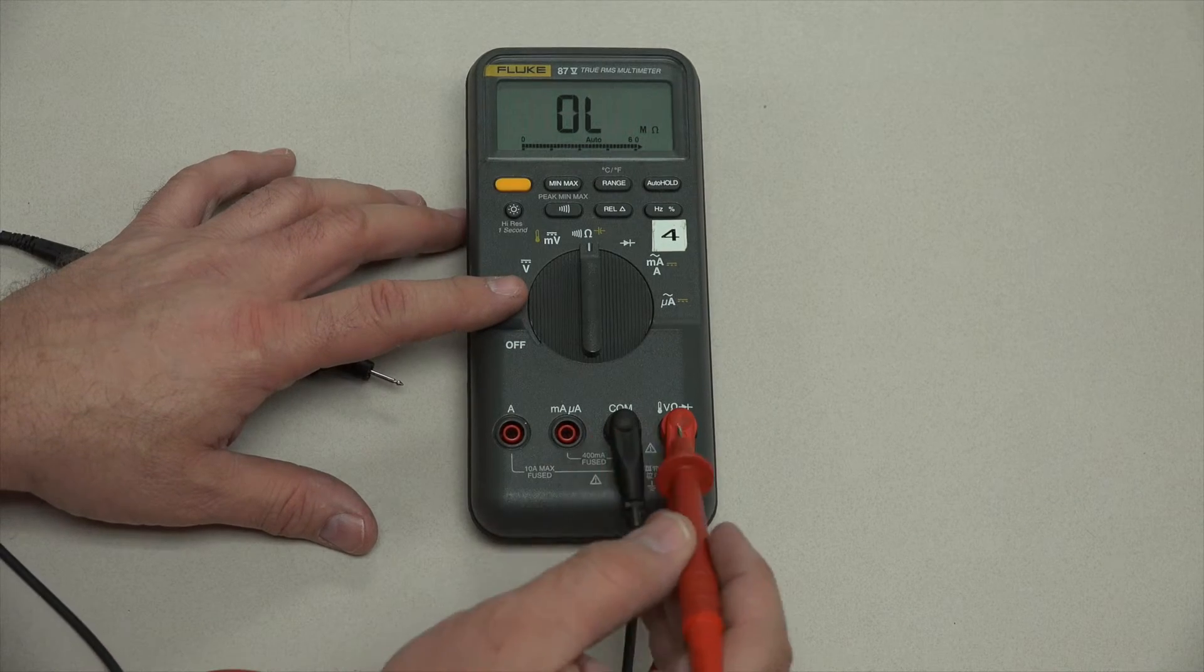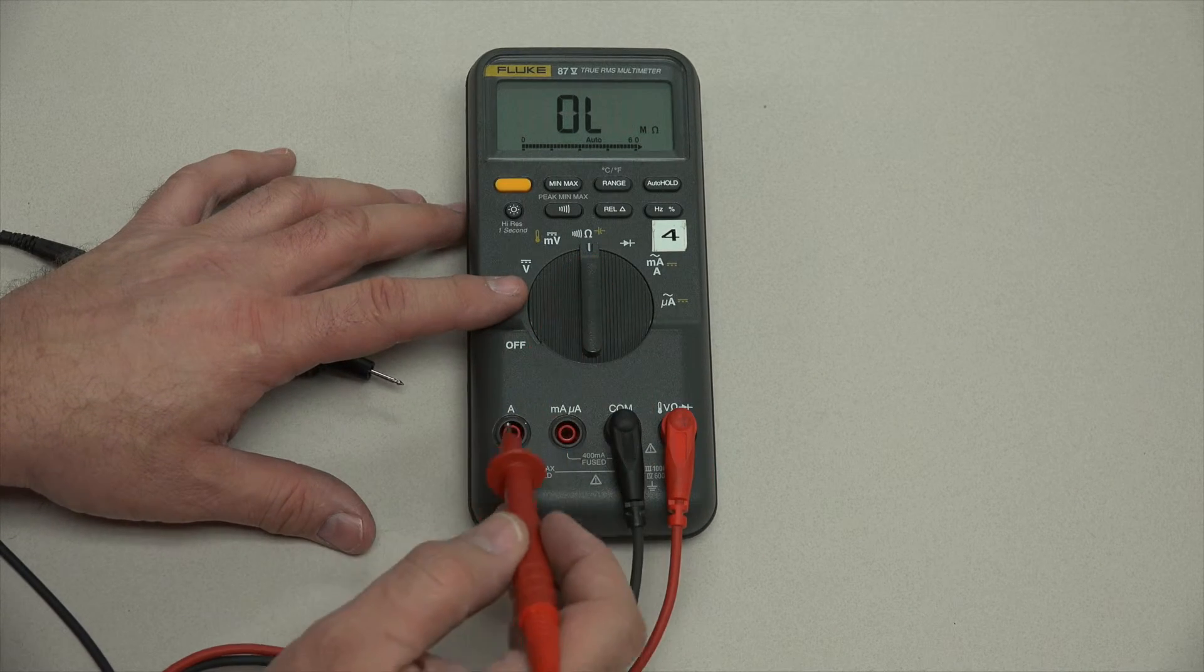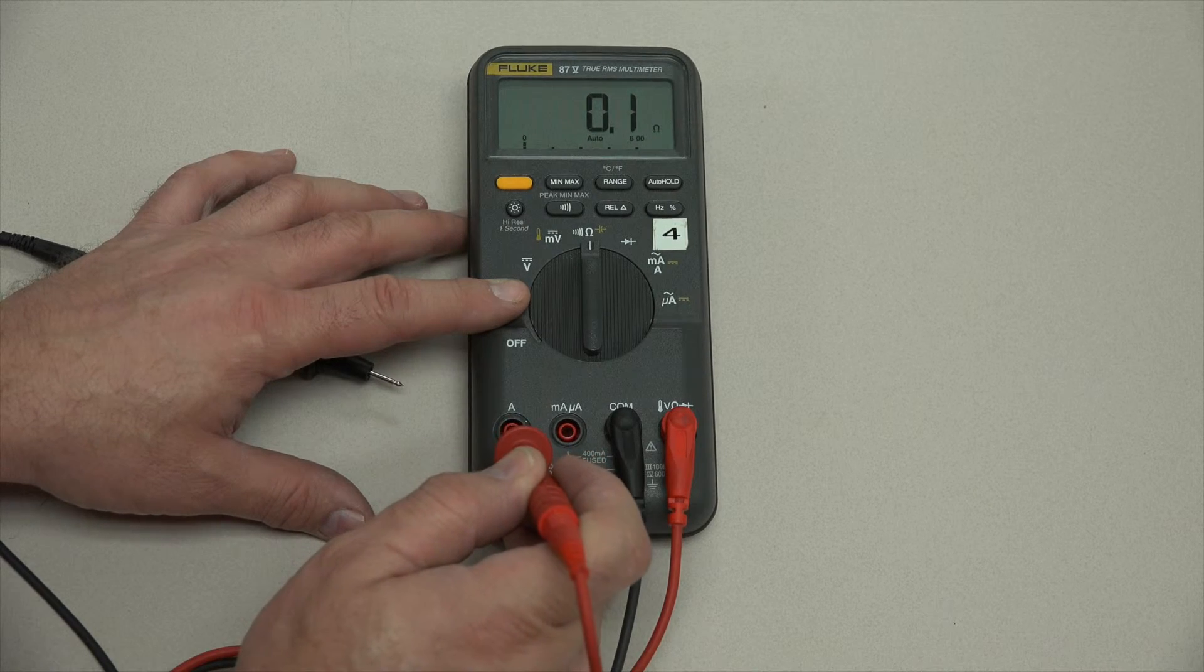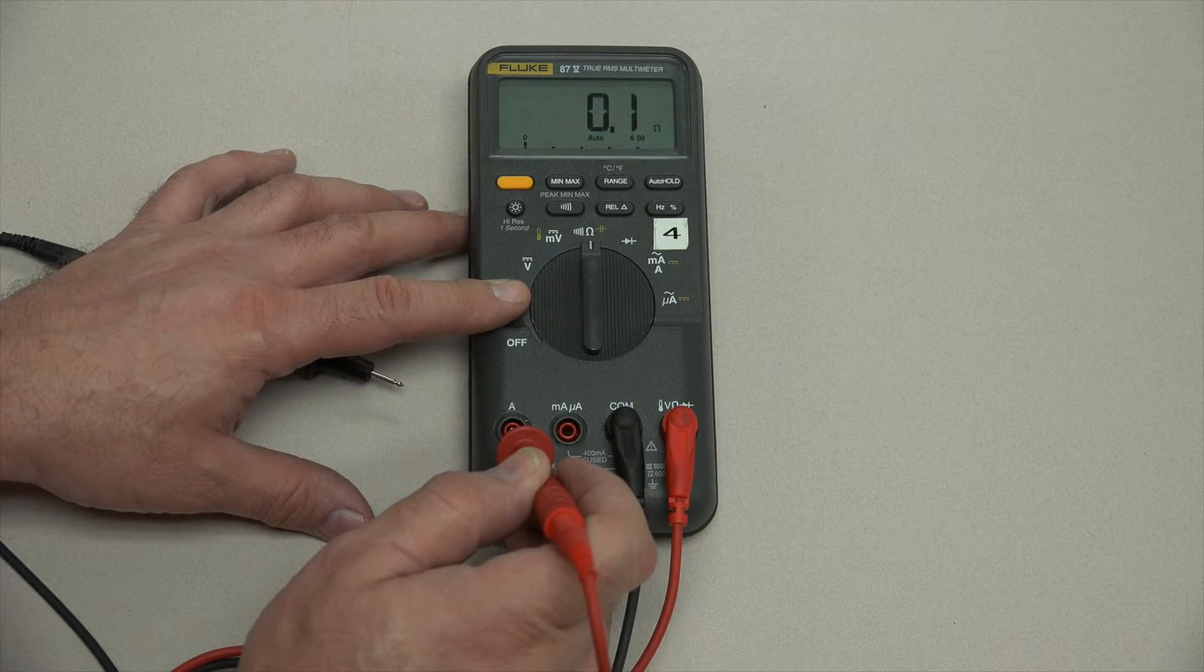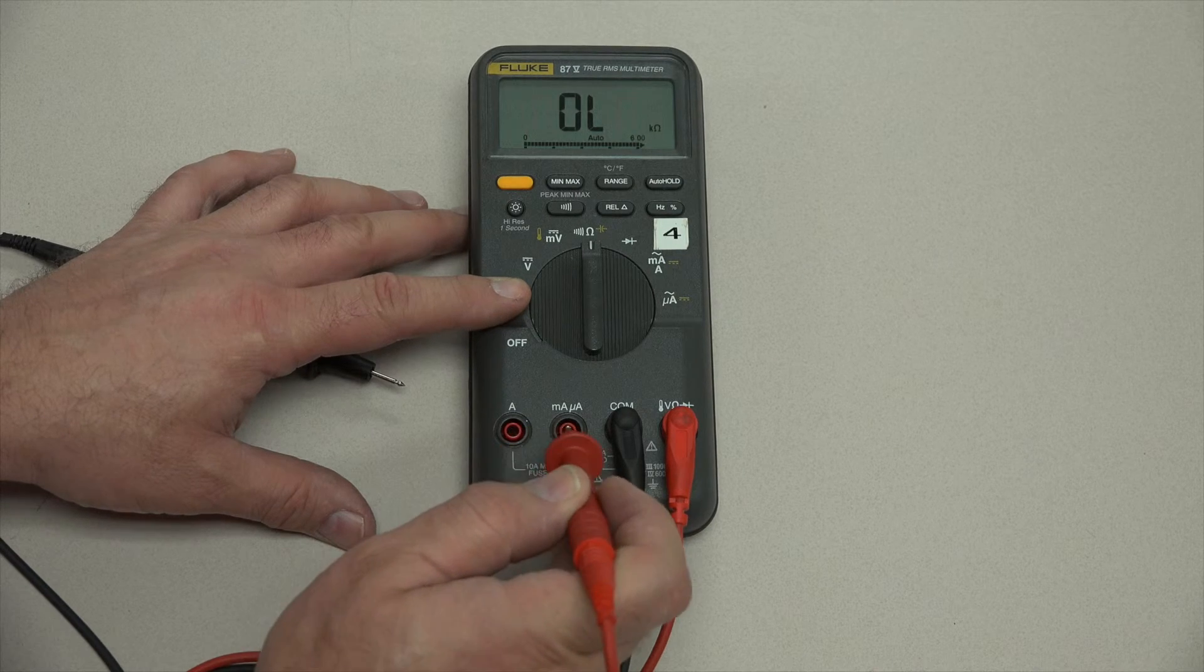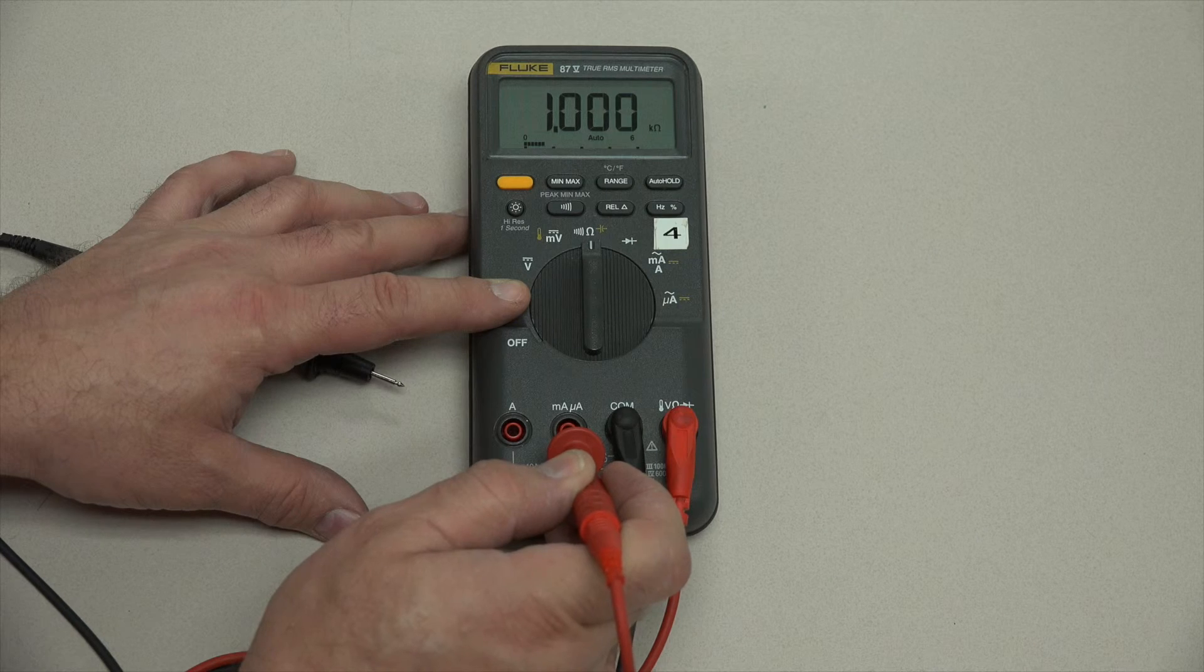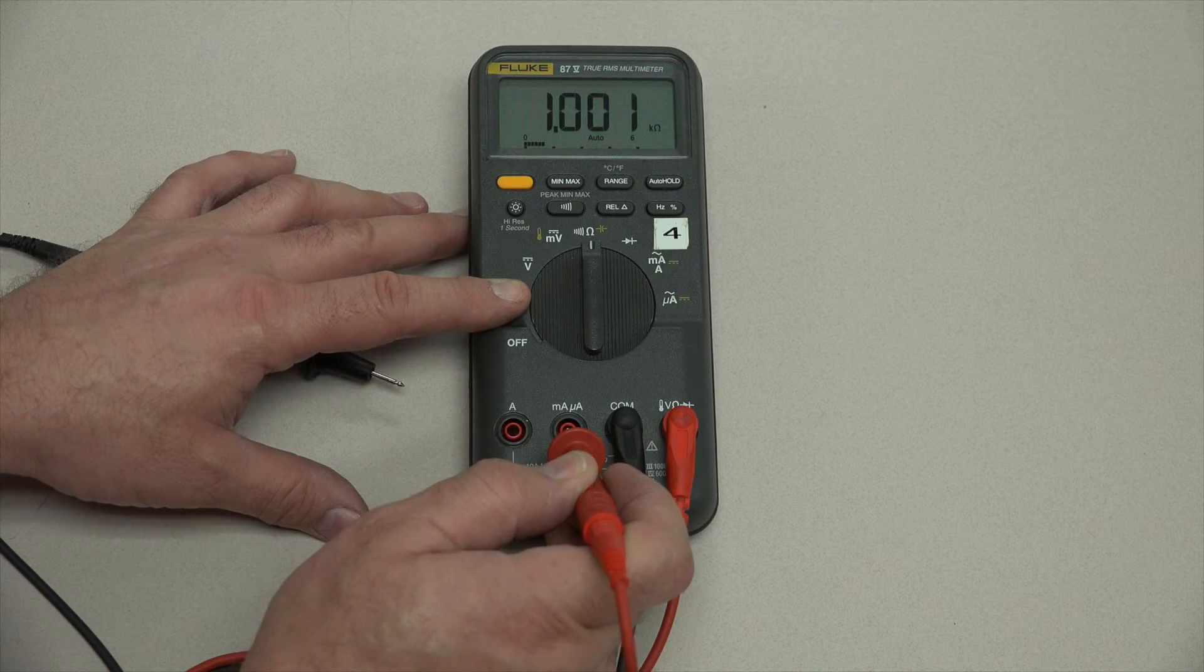So again, I take the ohmmeter lead, set it to measure ohms, I slide it down into that amp jack until I make contact with the contact. I've got about 0.1 ohm here on the high amp fuse, and as I move it down through here, I'm going to show right about 1,000 ohms through this fuse here.